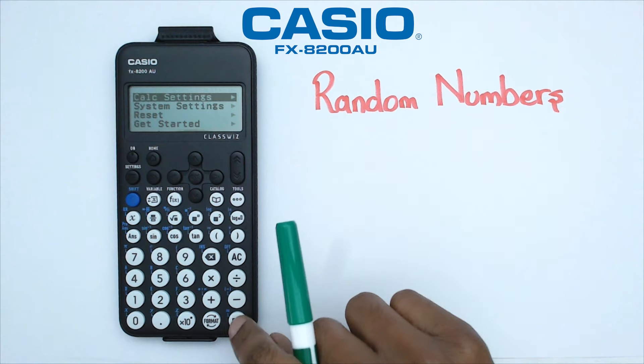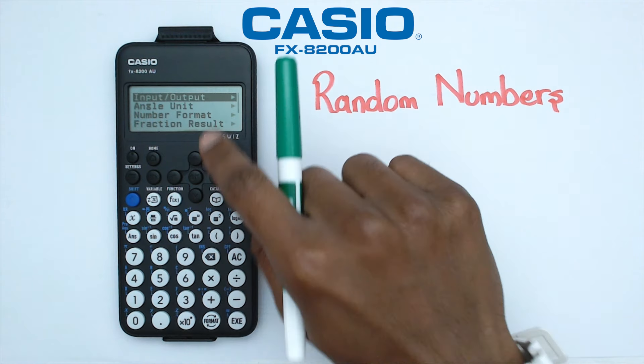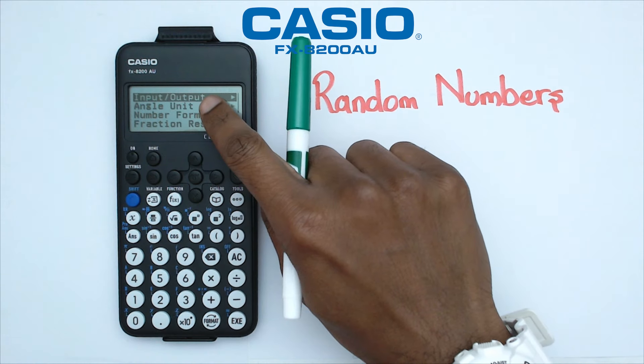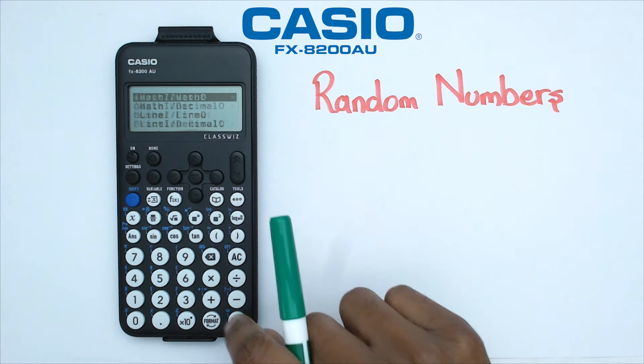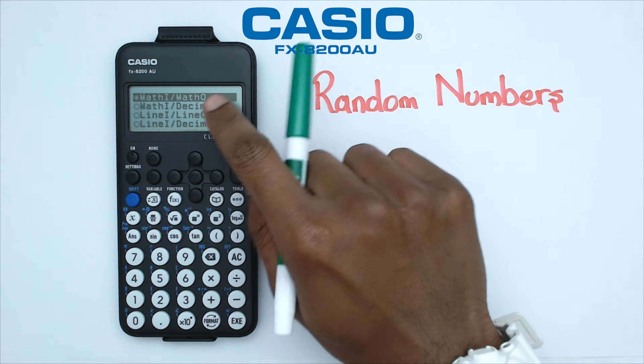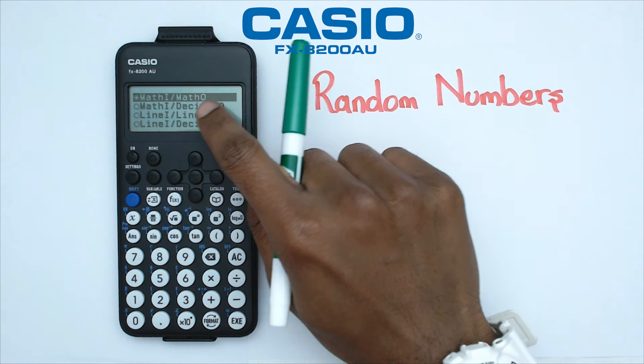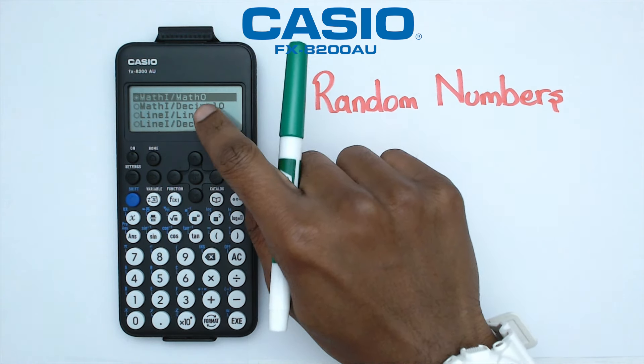The reason it's coming as fractions is because if I go into settings, then calc settings, then input/output — right now it's set to maths input and maths output. I'm going to change it to maths input and decimal output.